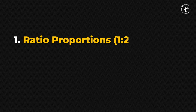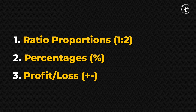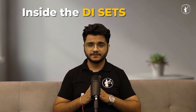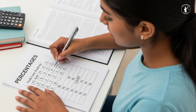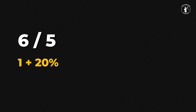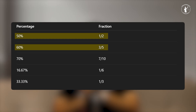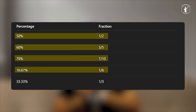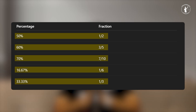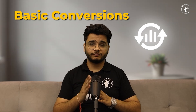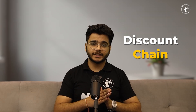Topic one: ratio, proportion, percentages, and profit and loss. These appear very directly inside DI sets. Be fluent with percentage changes and quick conversions. For example, if the cost price of article A is 20% higher than B, the fraction is 6 by 5 — that is, 1 plus 20% equals 6 by 5. Learn basic fractions: 50% is 1/2, 60% is 3/5, 70% is 7/10, 16.67% is 1/6, 33.33% is 1/3. These conversions will save a lot of time in your exam.